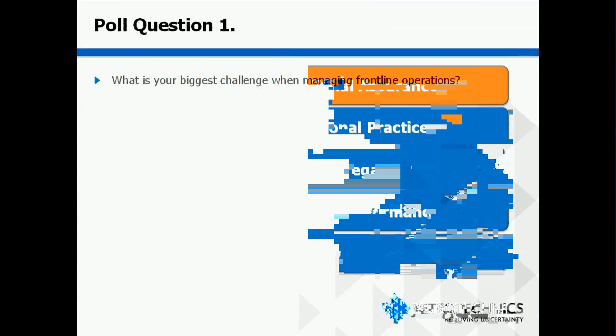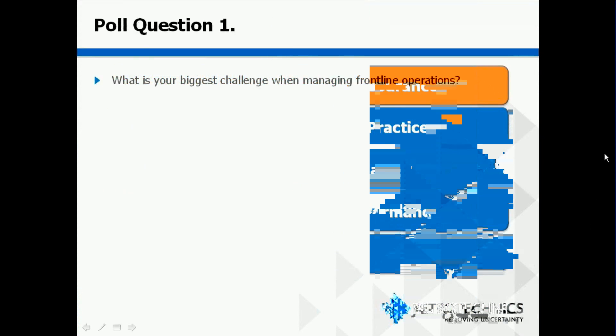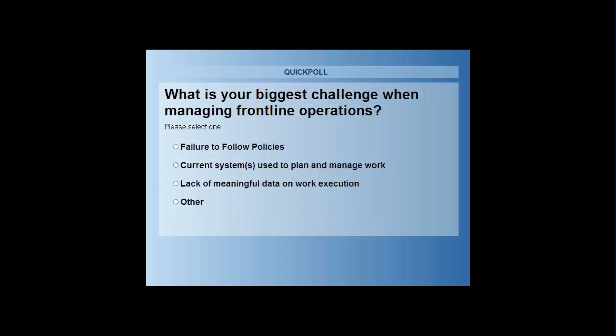The first poll of today is: what is your biggest challenge when managing frontline operations? Your screen will turn blue and provide you with several options to respond to. The options are: first, failure to follow policies; second, current systems used to plan and manage work; third, lack of meaningful data on work execution; and fourth, other. You'll have about a minute or so to complete that.